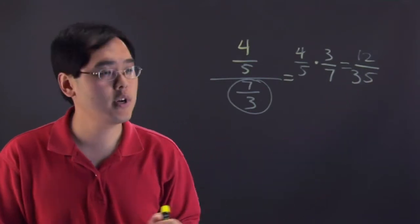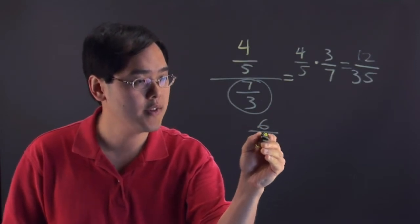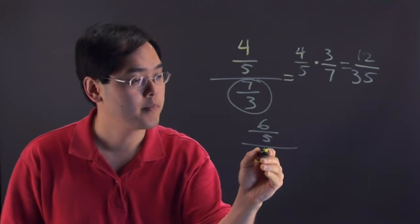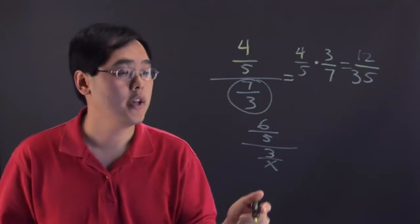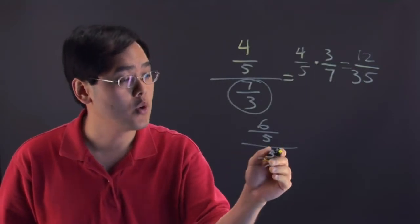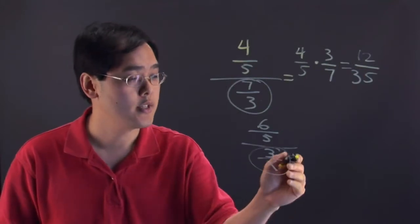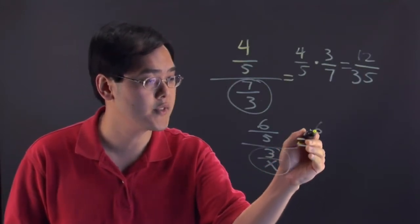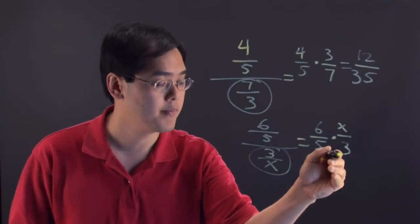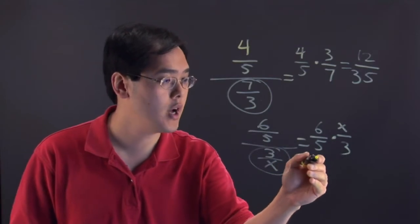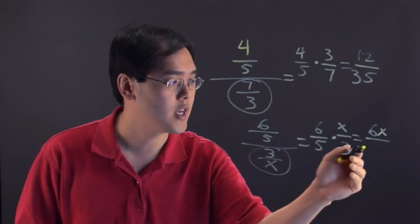If you were to go into algebra, let's say you have 6 fifths divided by 3 over x, hypothetically. It works the same way — you take your denominator and think about the reciprocal of 3 over x. The reciprocal of that is x over 3. So you're really taking 6 fifths and multiplying by x over 3. Then you multiply across and you'll have 6 times x, which is 6x, over 5 times 3, which is 15.